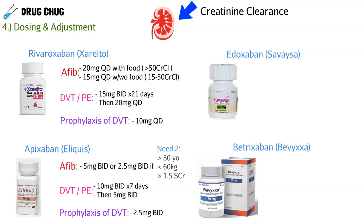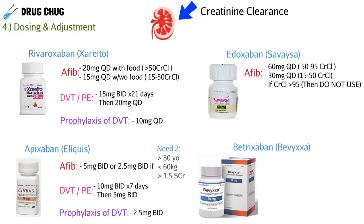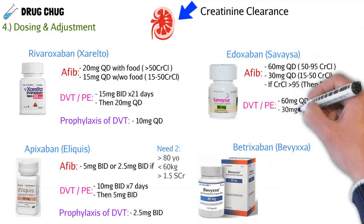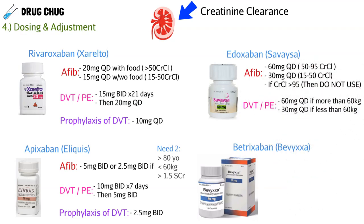Next is edoxaban (Savaysa). For atrial fibrillation: 60 mg daily if creatinine clearance is 50–95, or 30 mg daily if creatinine clearance is 15–50. Important note: if creatinine clearance is greater than 95 or less than 15, this drug cannot be used because it clears too fast. For a current blood clot: 60 mg daily if weight is greater than 60 kg, or 30 mg daily if less than 60 kg.